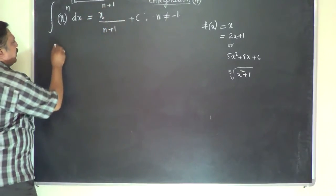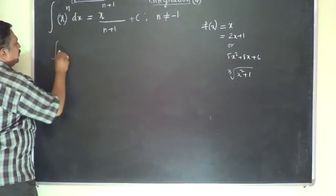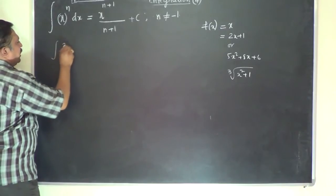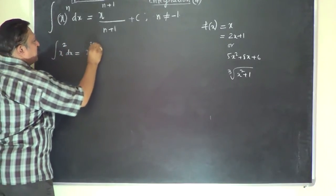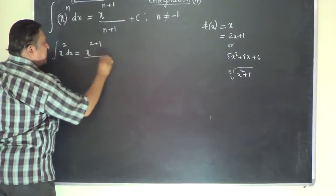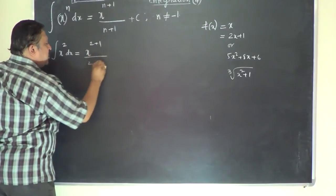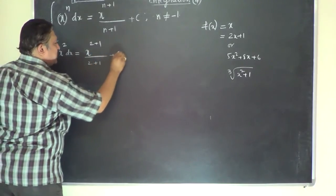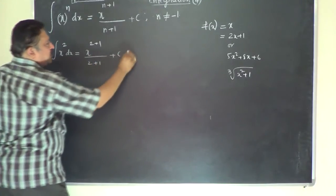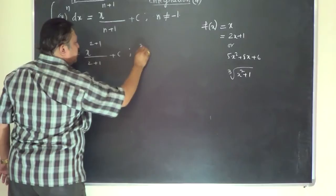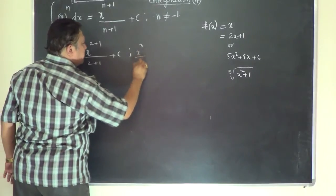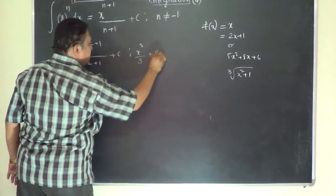For example, the integral of x squared dx will be x to the power of 2 plus 1 divided by 2 plus 1 plus c, which gives the answer x cubed by 3 plus c.